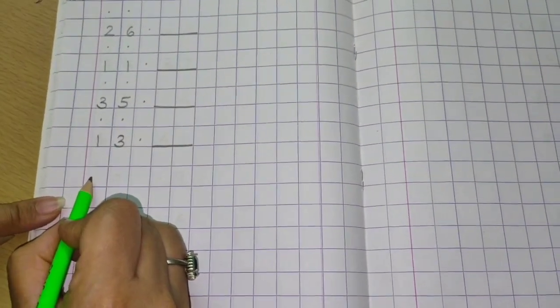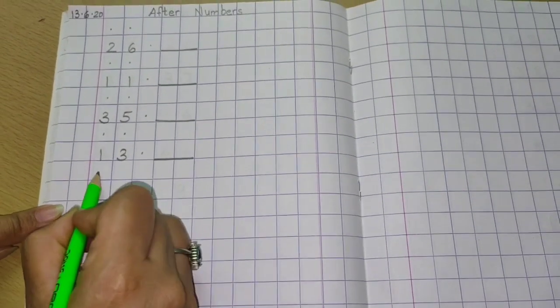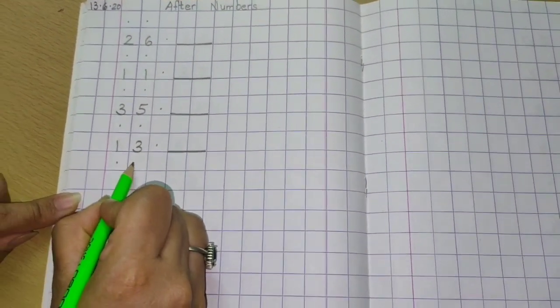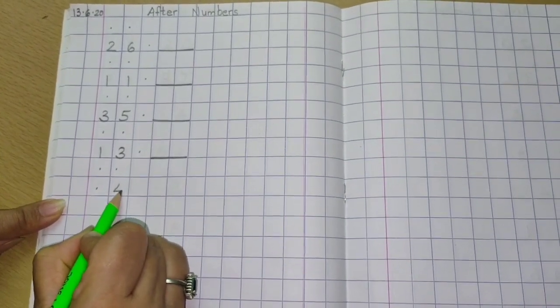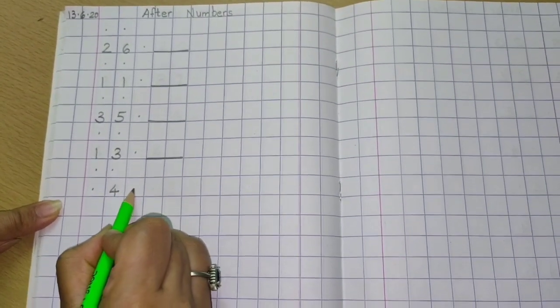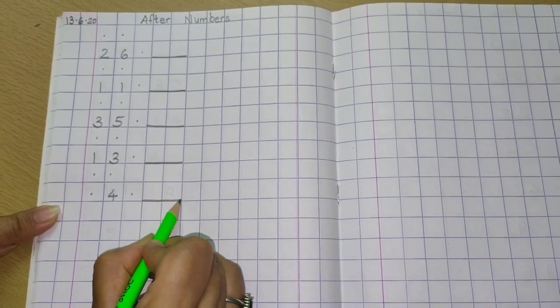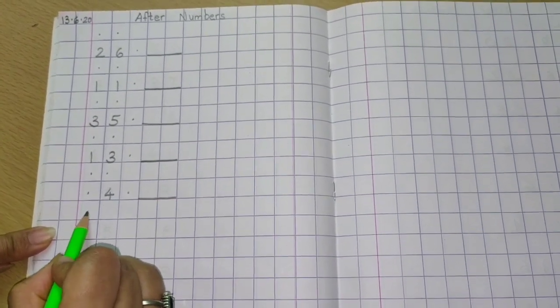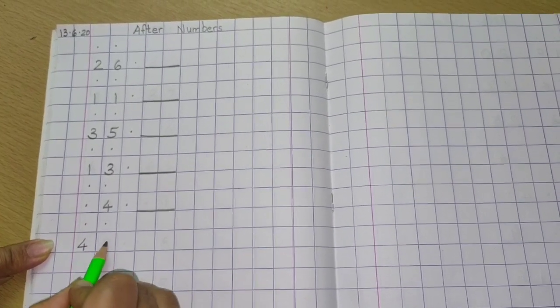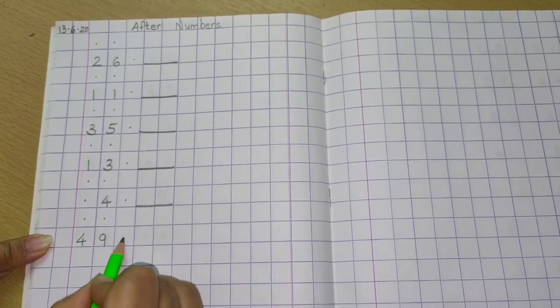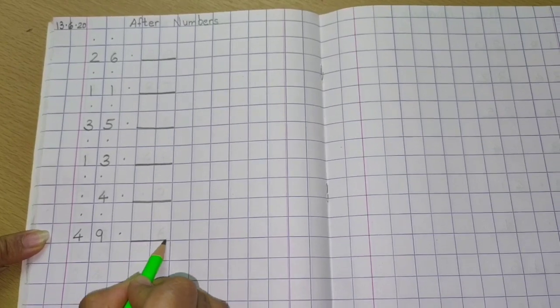Now we are writing single number, number 4. So first we make two dots underneath 13, then one more dot and then number 4. Then one dot and dash on two boxes. Next again two dots, then 49. One dot and dash on two boxes.